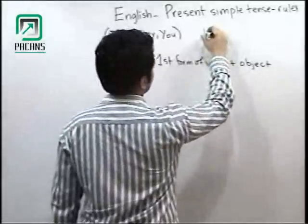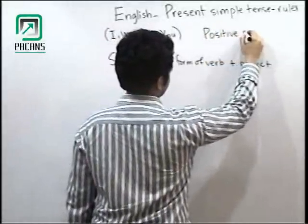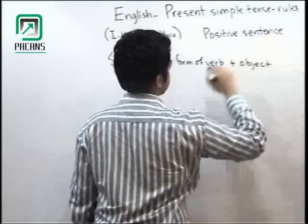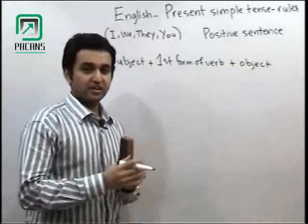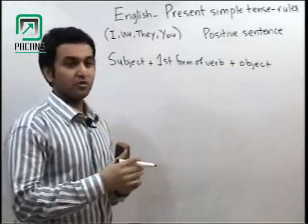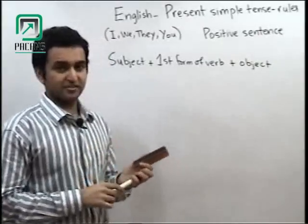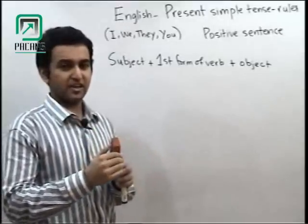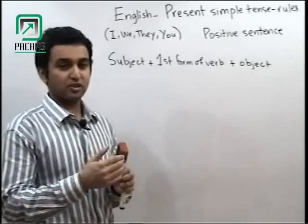This I am going to tell you the positive sentence. Positive sentence is one that doesn't have any negation, no 'not'. Negative has 'no' or 'not', interrogative is when you ask a question.